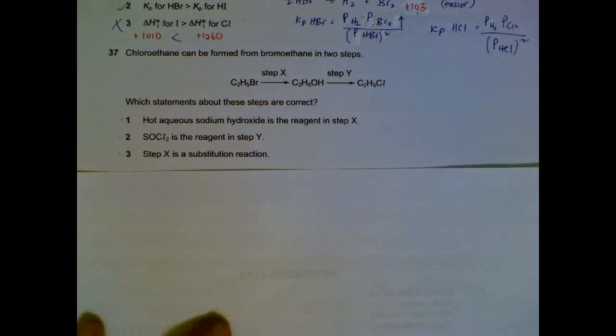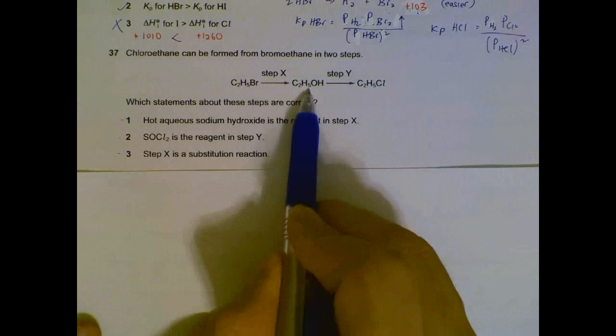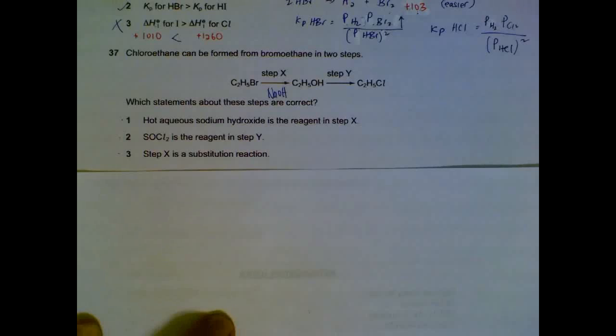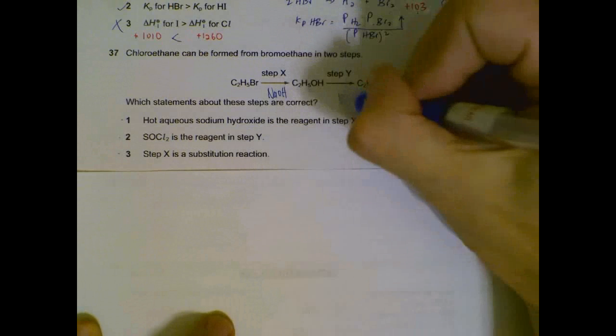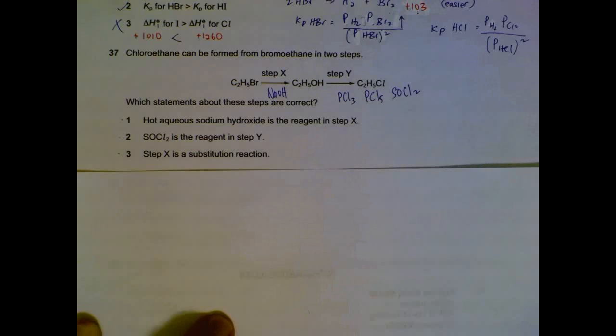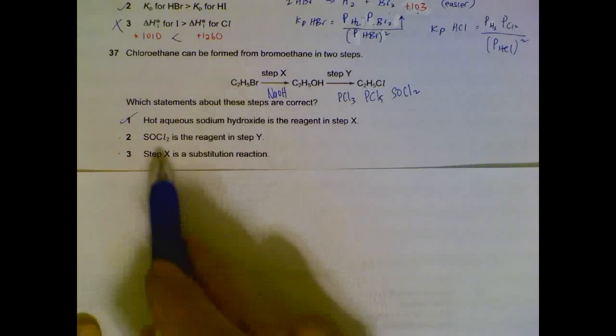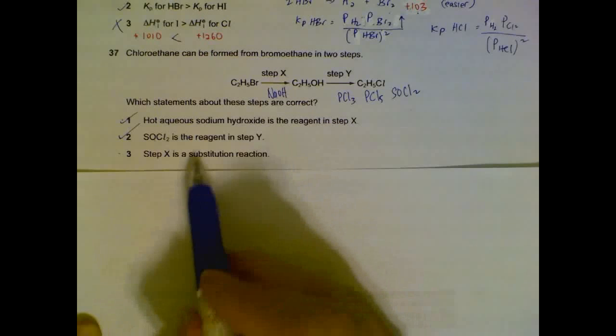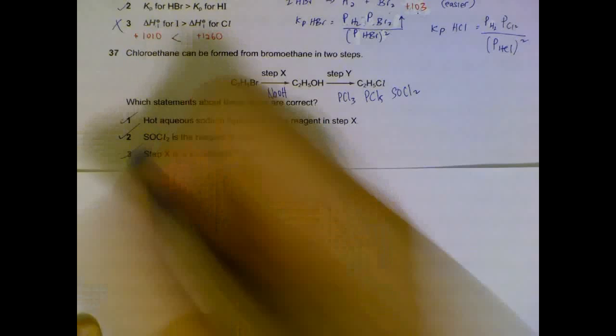Chloroethane can be formed from two steps. We have halogen alkanes to form it into an alcohol. We have to replace this with OH. We can use hydrolysis of sodium hydroxide. And then once we have this, we want to change it back to halogen alkane. We can use PCl3, PCl5, SOCl2, some of the options and all that. So HOT equals sodium hydroxide is a reagent in step X, that's feasible. SOCl2 step Y, one of the options. And X is a substitution reaction. We have substituted your Br with OH. So all 3 are correct.